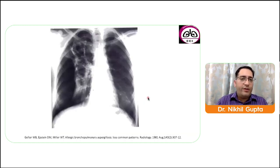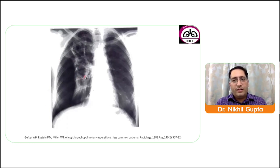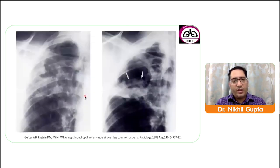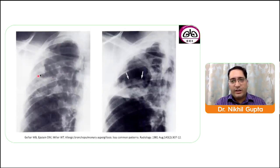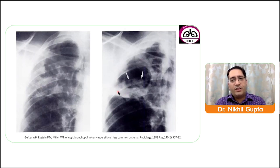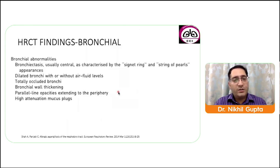Uncommon permanent findings include pleural thickening, mycetoma formation, and linear scars. A classical study published in Radiology showed pseudo-hilar adenopathy, cavitation, mycetoma, empyema, and pneumothorax as uncommon findings in 14 ABPA patients. An uncommon finding of right-sided pneumothorax with underlying bronchiectasis is shown in a patient with long-standing ABPA, and serial X-rays of another patient show consolidation in the right upper lobe progressing to mycetoma with sputum positive for Aspergillus fumigatus.